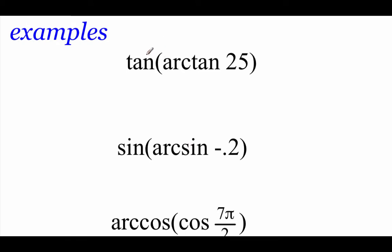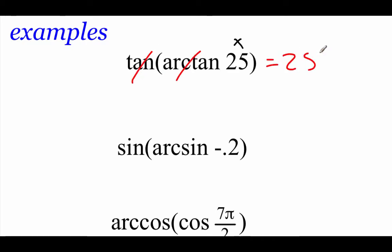Taking a look at our first example, we've got the tangent of the arc tangent of 25. Now this represents an x value, and we said those x values in this instance can be any real number, so this one's going to work out. The tangent and arc tangent are just going to cancel each other out, and we get 25 as our final answer.